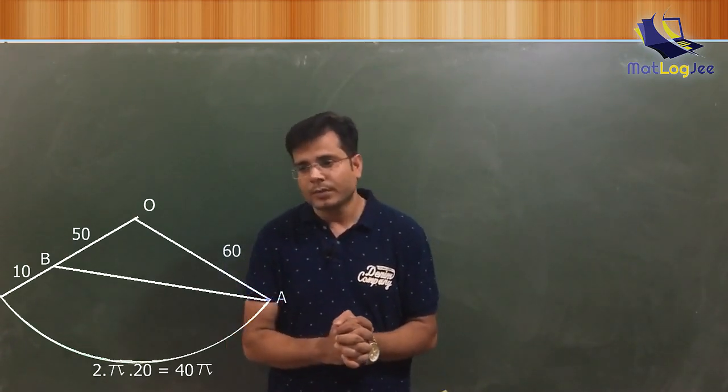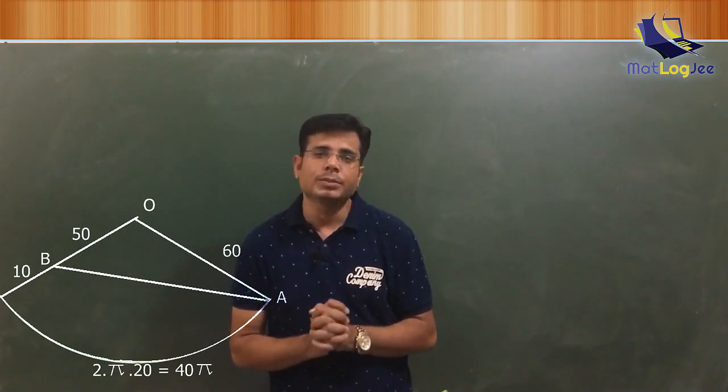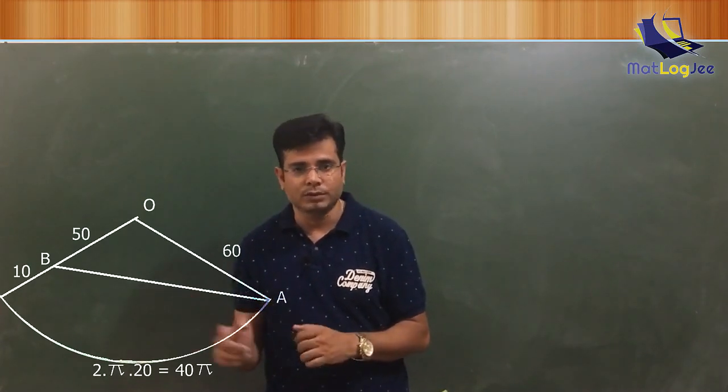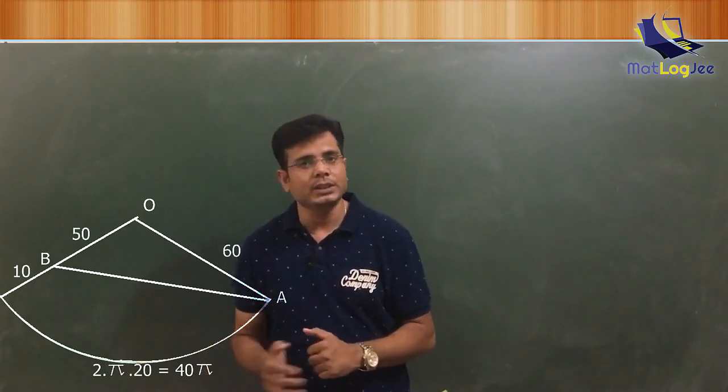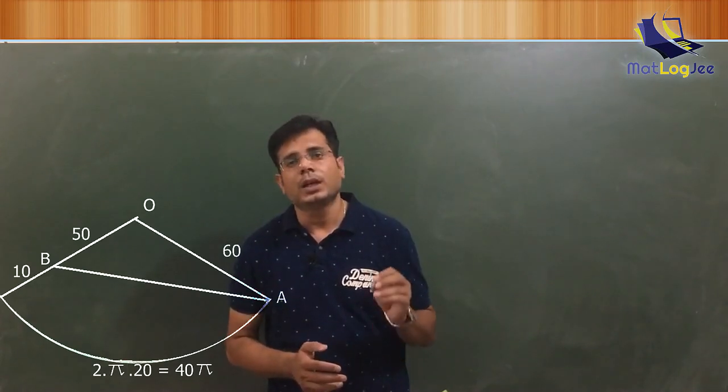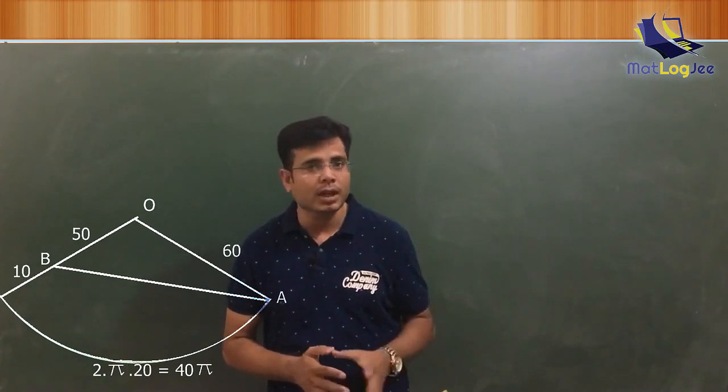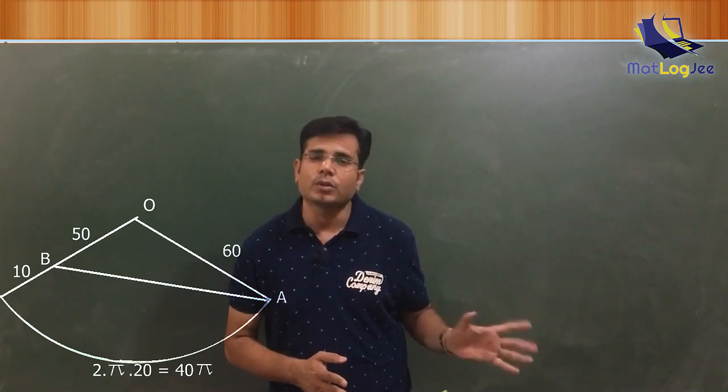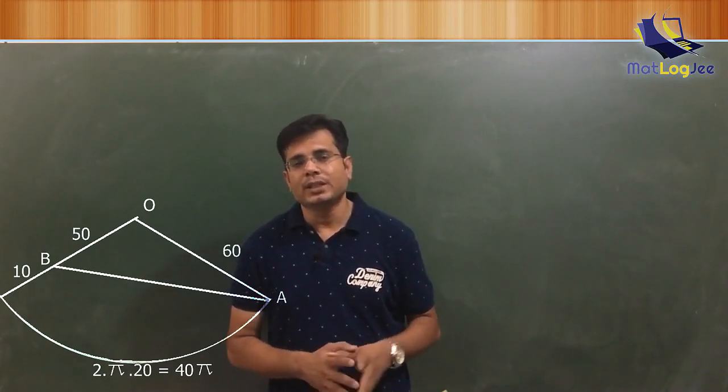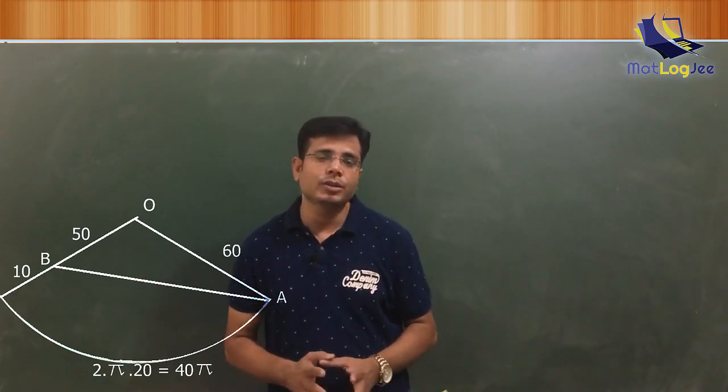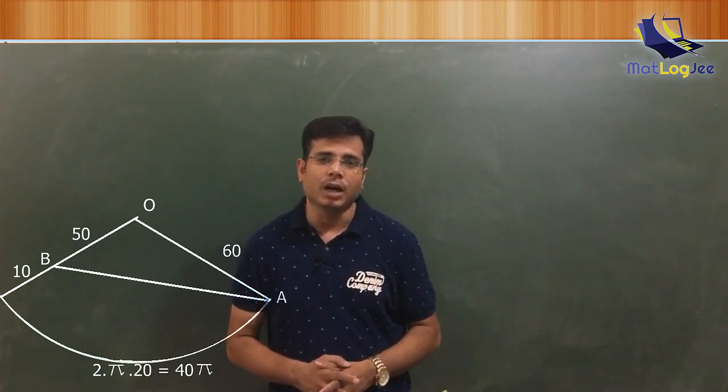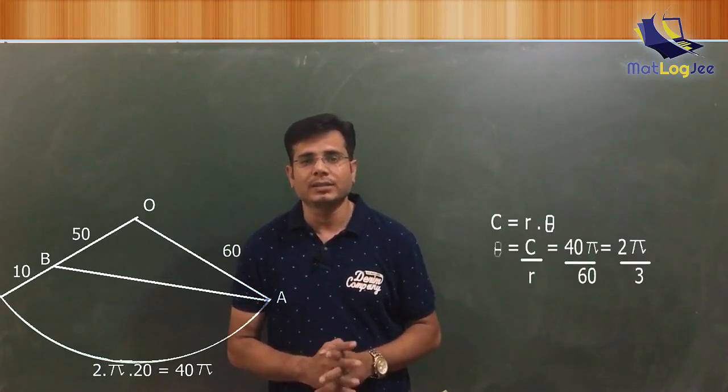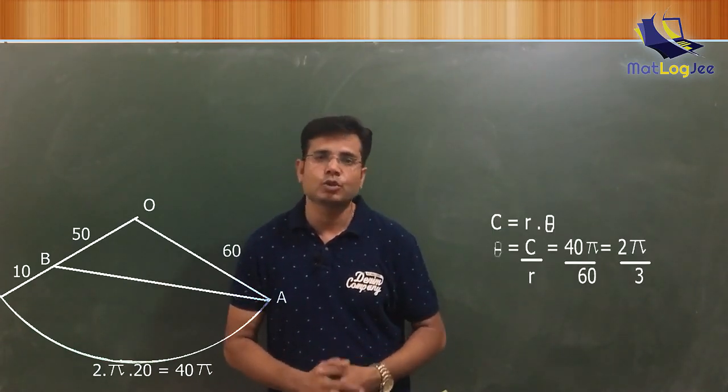In this unwrapped diagram, the circular arc is basically the circumference of the cone. So we can calculate it. We have the length of circular arc and the radius of this circular part. So we can easily calculate the angle theta by using the formula C equals R theta. And it goes like this. And finally you got theta equals to 2π by 3.